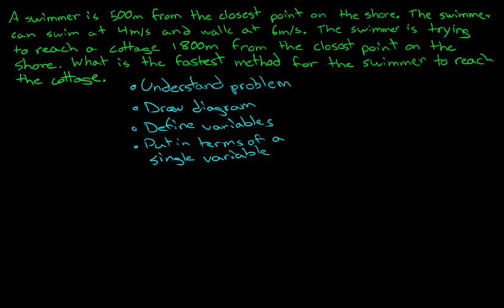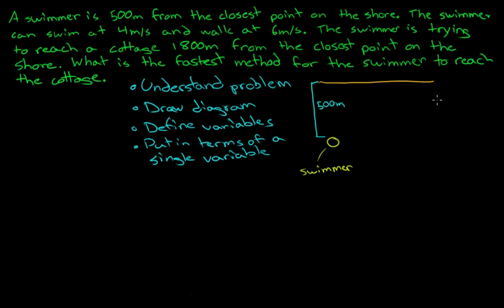So let's understand the problem. We're trying to get to the cottage, and the swimmer is right here. They're 500 meters from the shore, and on the shore they are 1800 meters from a cottage. So that means that this distance here is 1800 meters.